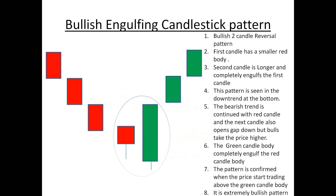The bullish engulfing candlestick pattern is a two-candle bullish reversal pattern. In this pattern, the first candle has a smaller red body, and the second candle is longer and completely engulfs the first candle.